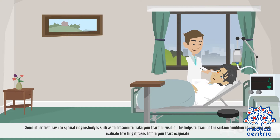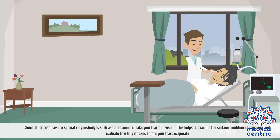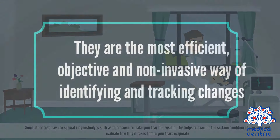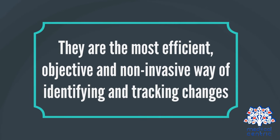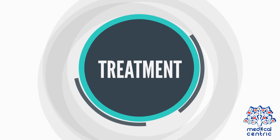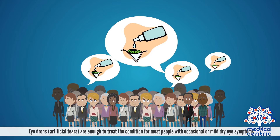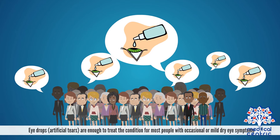Some other tests may use special diagnostic dyes, such as fluorescein, to make your tear film visible. This helps to examine the surface condition of your eyes and evaluate how long it takes before your tears evaporate. These are the most efficient, objective, and non-invasive ways of identifying and tracking changes.